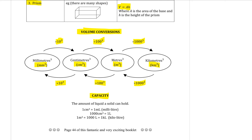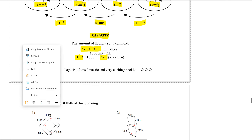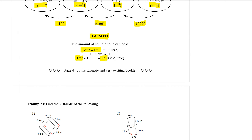The easiest conversions to remember are that one centimetre cubed is the same as one millilitre, and one metre cubed is exactly the same as one kilolitre. For any other conversions you can use the diagram. Millilitres, litres, and kilolitres all work in thousands — so if you convert centimetres cubed to millilitres, you can easily convert that to litres by dividing by a thousand.